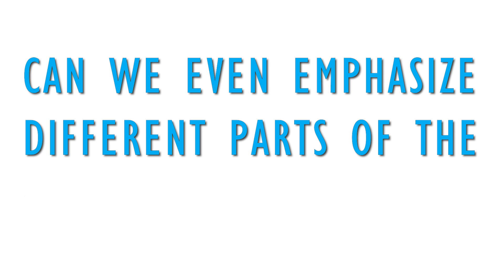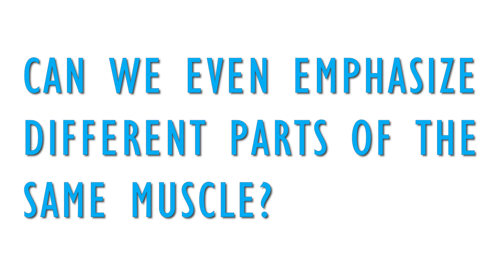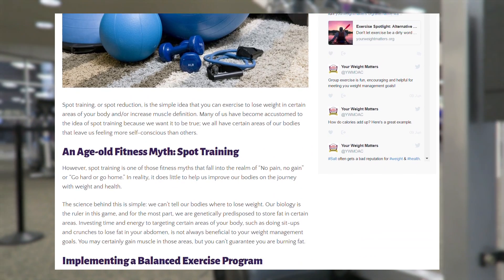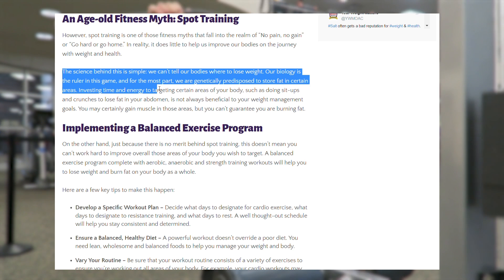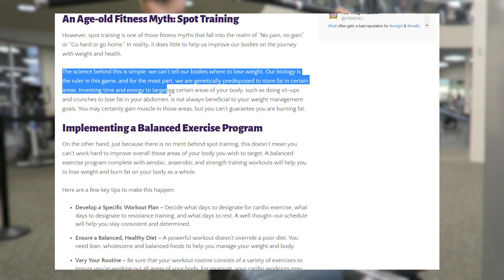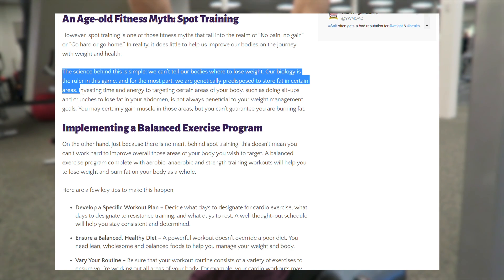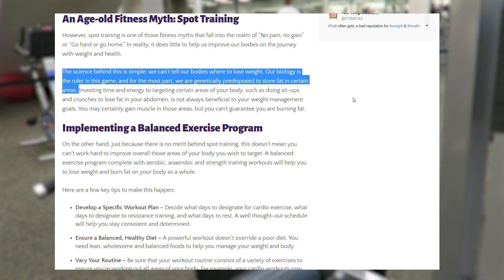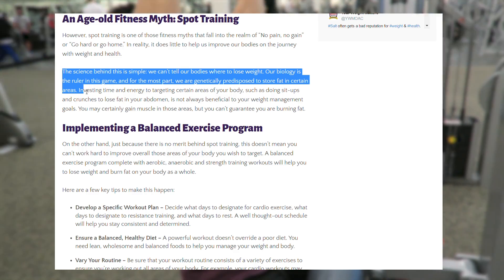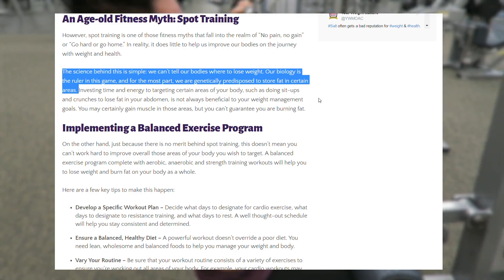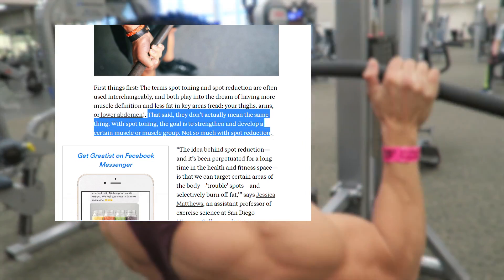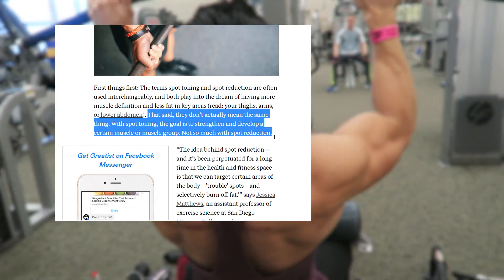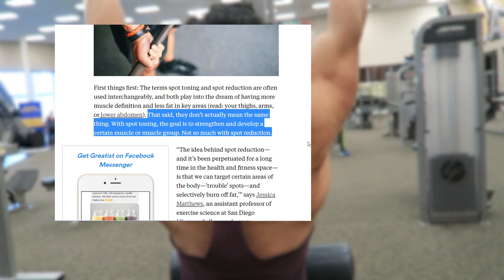But can we even emphasize different parts of the same muscle? Spot training is a bro science theory that fat or muscle can be lost or gained in a specific area. While it is not true that fat can be purposefully lost in a specific area without affecting other areas of the body, it may be true that muscle can be trained in a specific area.